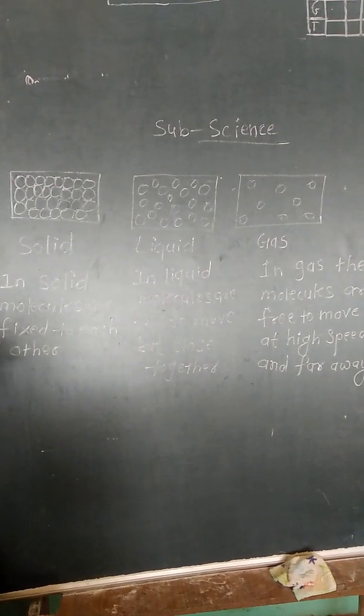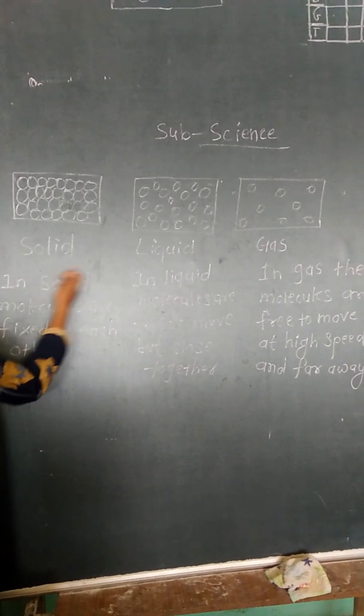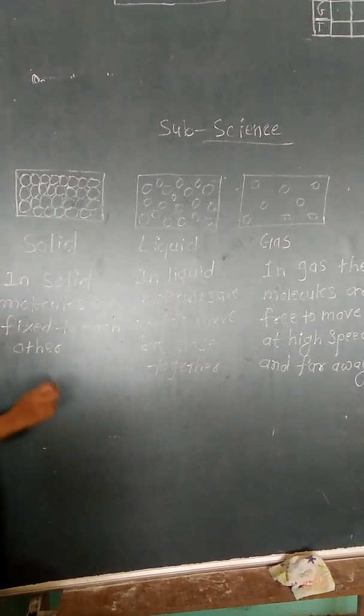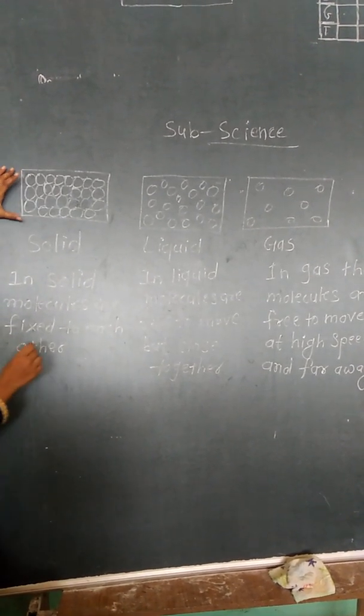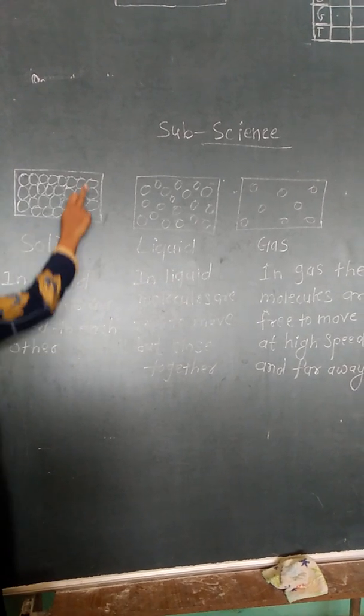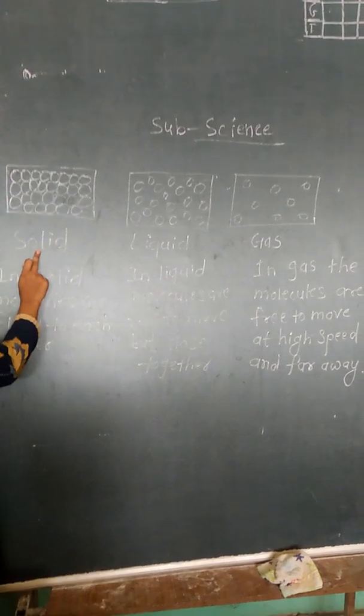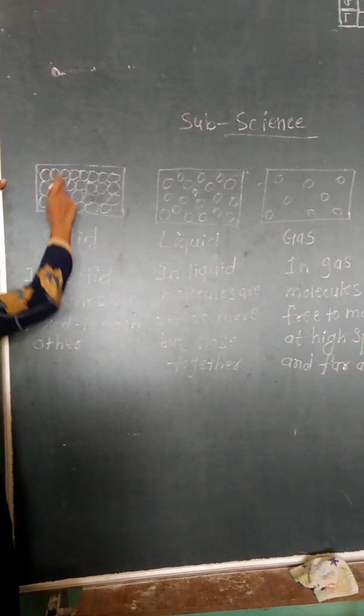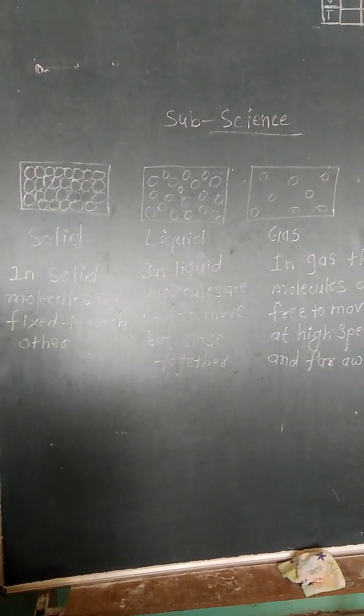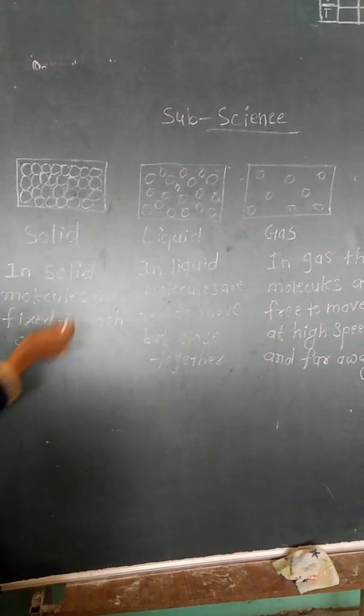In the previous class we have to see the examples of solid, liquid and gas. Now we have to see some pictures given here. So this picture we have to see, this is the solid particle. What is this? Solid particle.